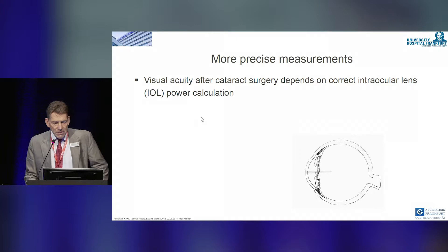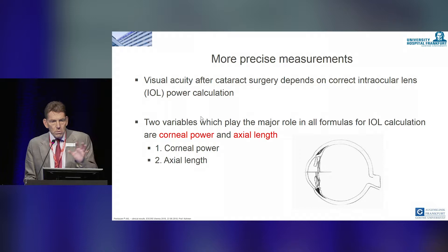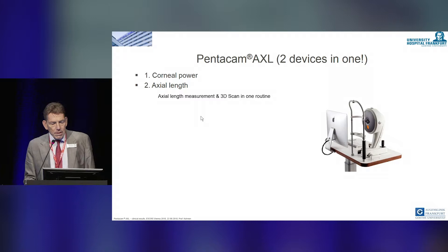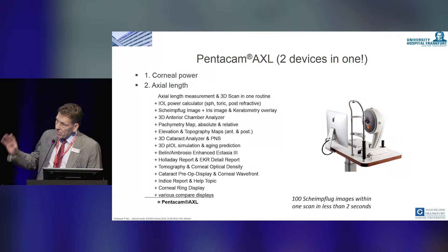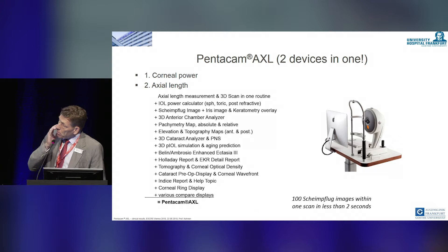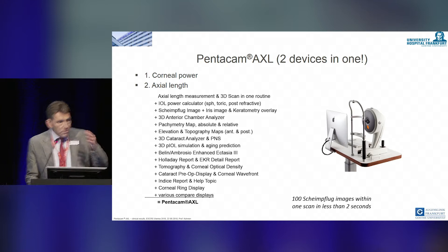We have two variables: corneal power and axial length. The Pentacam AXL is a device which has corneal power measurements and axial length in one device. You can see here all what is possible with this — I won't go through this in detail, but you have to explore it yourself to take full advantage of it.